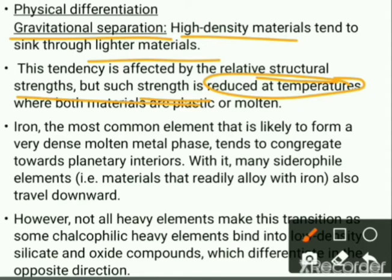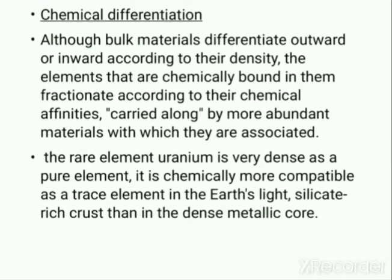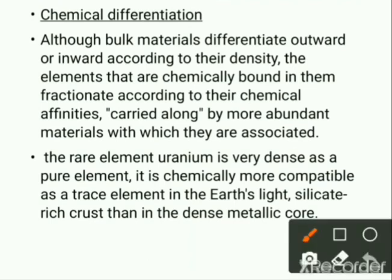Iron usually congregates towards the interior along with its siderophile elements — materials that readily alloy with or make compounds with iron — and these also travel downwards. However, not all heavy elements make this transition. Some chalcophile heavy elements may bind to low-density silicate and oxide compounds, which move towards the outer layers even though they are heavy. This illustrates the importance of chemical differentiation, where elements chemically bound in minerals separate according to their chemical affinities.